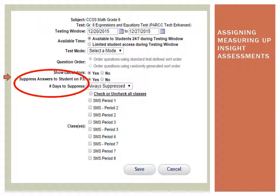By selecting yes, students will not see the answers upon completion in his or her student P3. If yes is selected, choose how many days to suppress the answers from the drop-down menu.